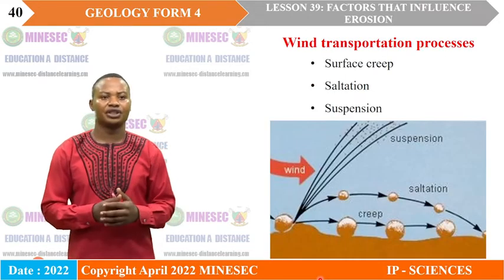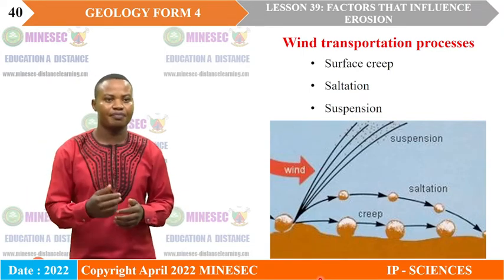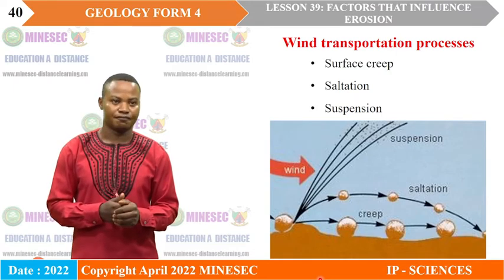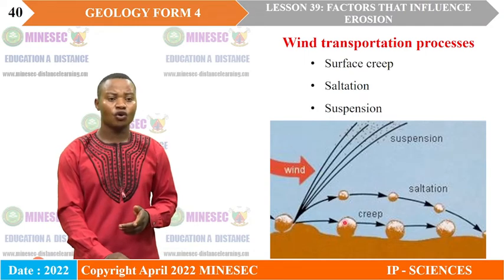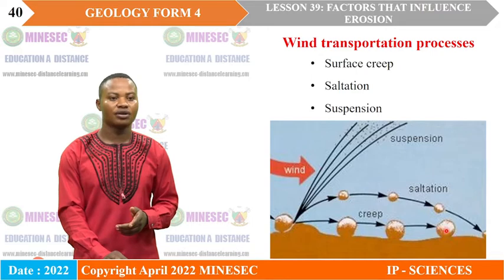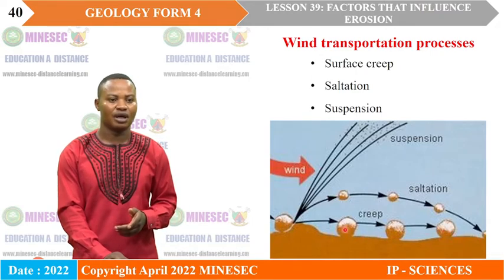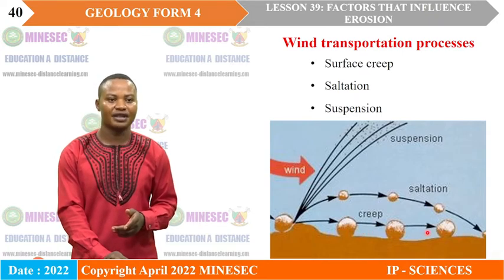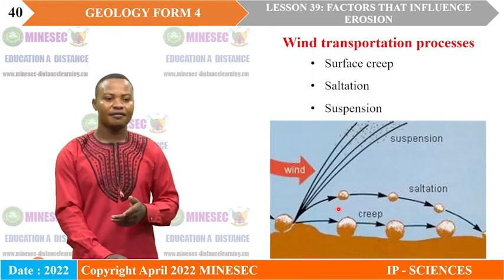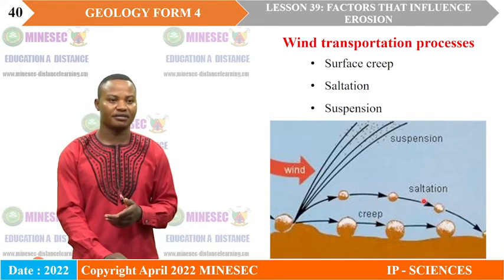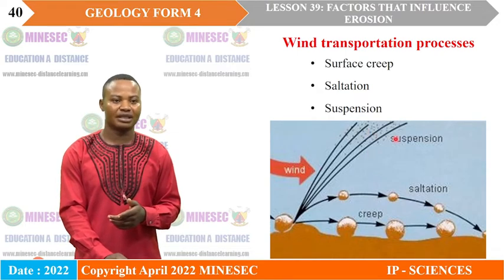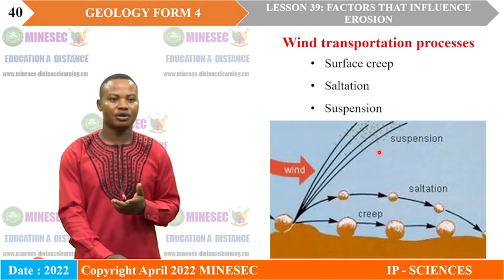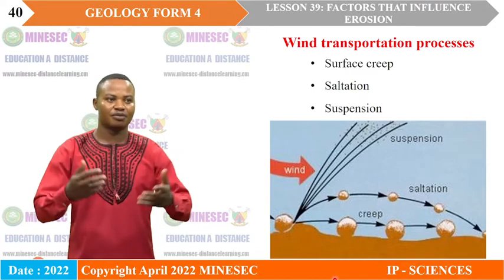Wind transportation processes are equally grouped into three — surface creep, saltation, and suspension — noting there is no solution here. In surface creep, large or coarse-grained materials are transported by rolling on the desert surface. Saltation involves materials transported through a series of bounces. Suspension involves light materials like dust particles transported above the surface, carried in suspension.